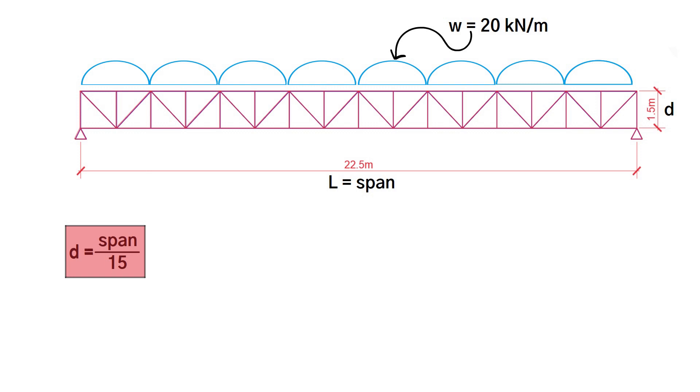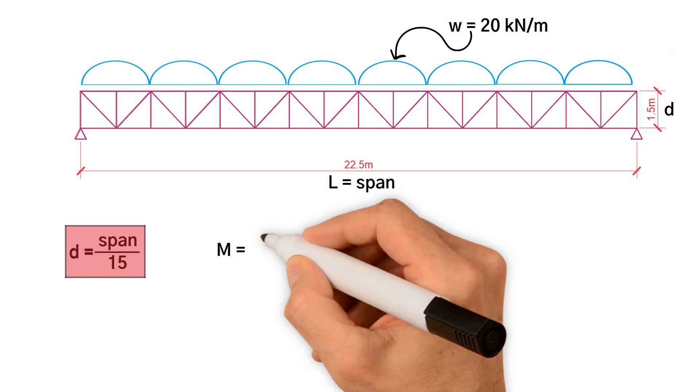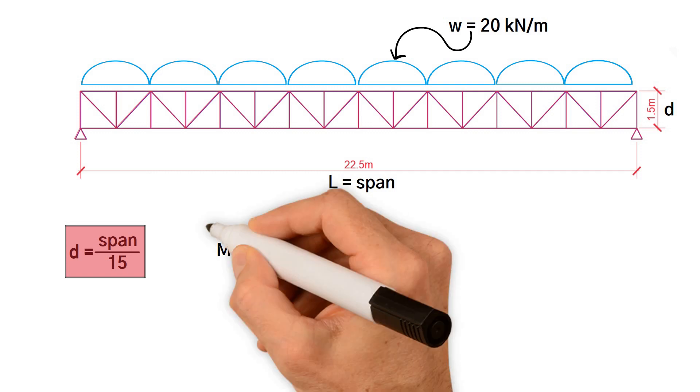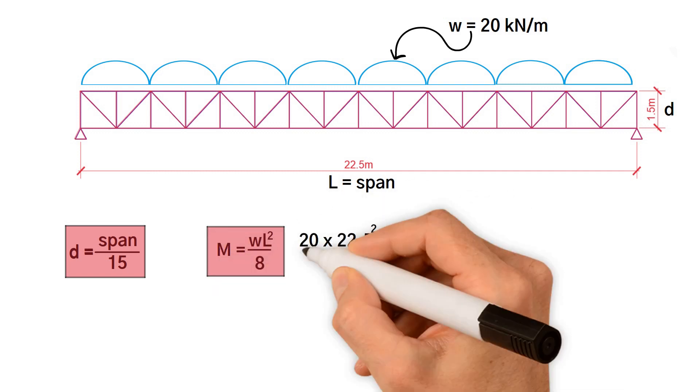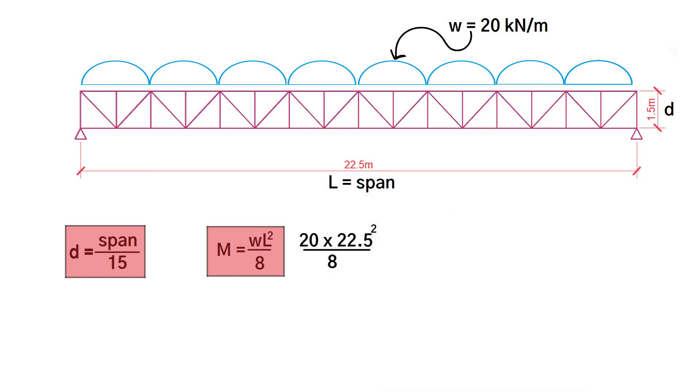To find the bending moment, similar to a simply supported beam, M equals WL² over 8. We've got 20 times 22.5² divided by 8, which equals 1,266 kilonewton meters.